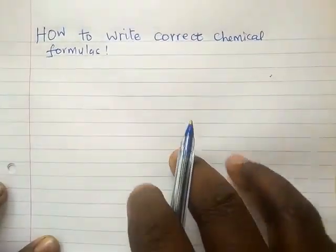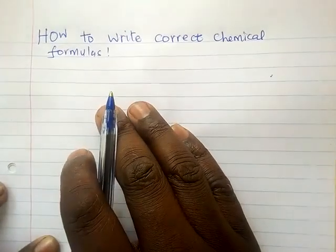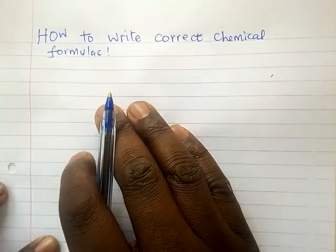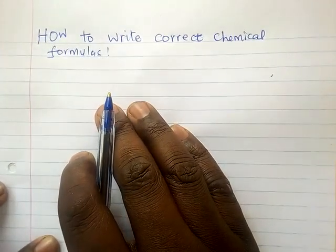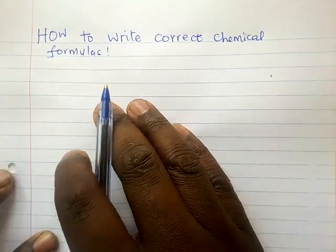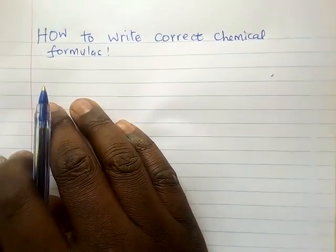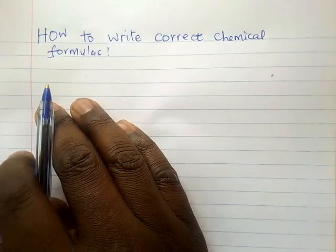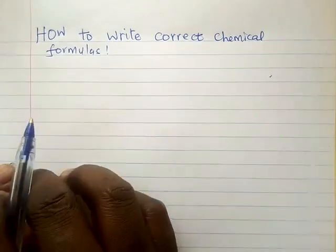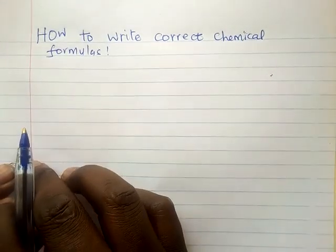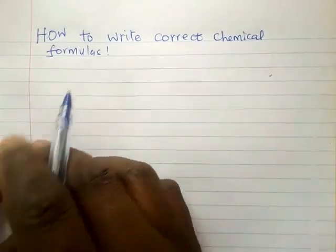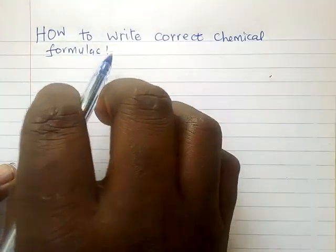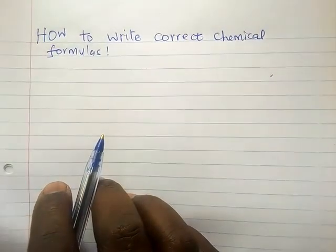Welcome. Today we want to talk about how to write correct chemical formulas. First you need to understand that a chemical formula — a compound — is made up of two or more elements which are chemically combined.